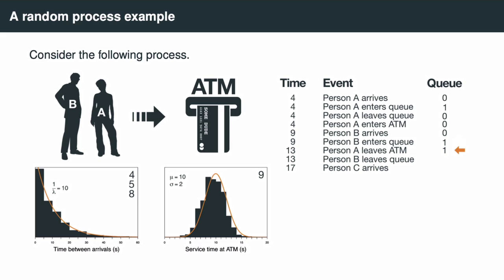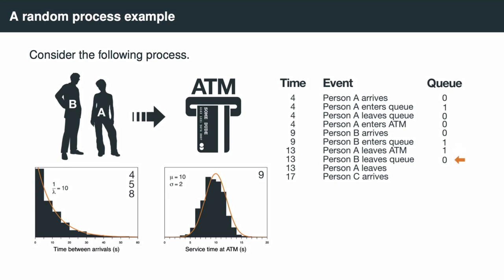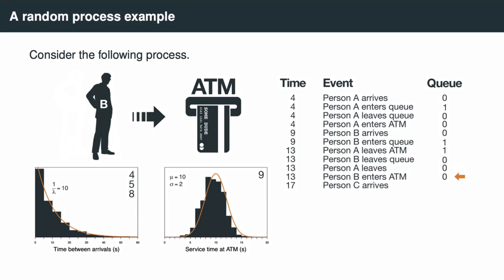The model then goes to the next event: Person A leaving the ATM. This triggers Person A leaving the system at exactly the same time, then Person B leaving the queue, which also happens at time 13. Person B leaving the queue triggers Person B entering the ATM at time 13. The model then moves to Person A leaving the system. At time 13, Person B also enters the ATM, triggering a draw from the service time distribution — in this case 13 seconds — meaning Person B will leave the ATM at time 26. This event is created and added chronologically to the discrete event list.